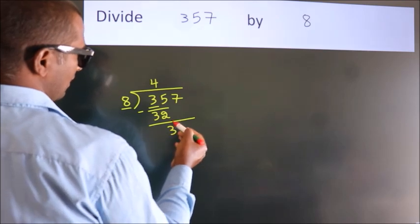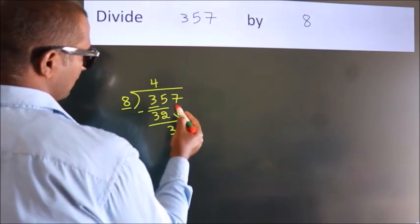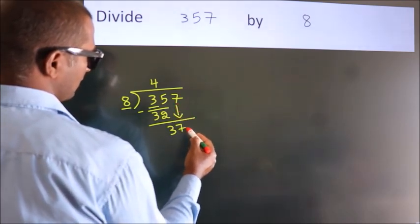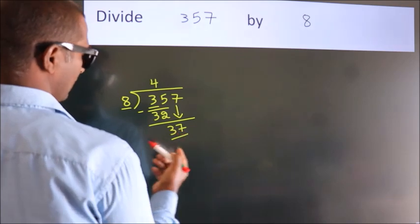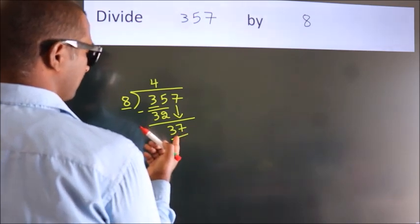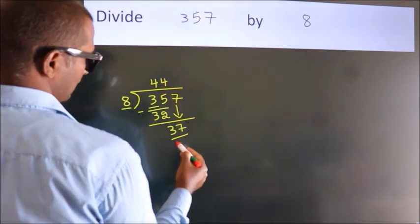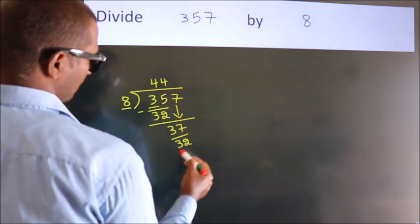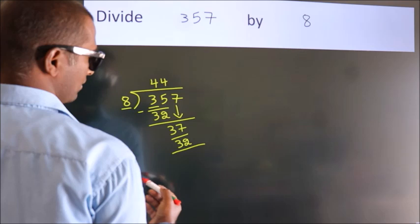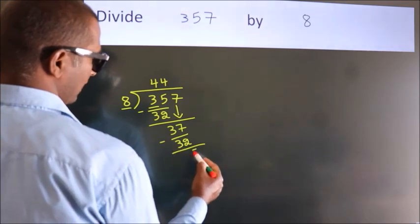After this, bring down the beside number. So 7 down, so 37. A number close to 37 in the 8 table is 8 fours, 32. Now we subtract. We get 5.